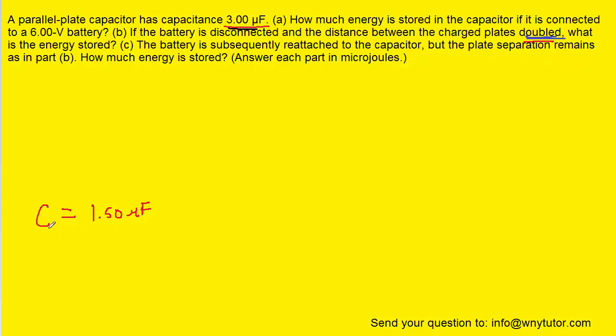that means the capacitance is going to remain the same as it was in part B. So the capacitance now is still 1.5 microfarads. But because we are reconnecting the battery to the capacitor, the potential difference comes back to being 6 volts, just like it was originally.